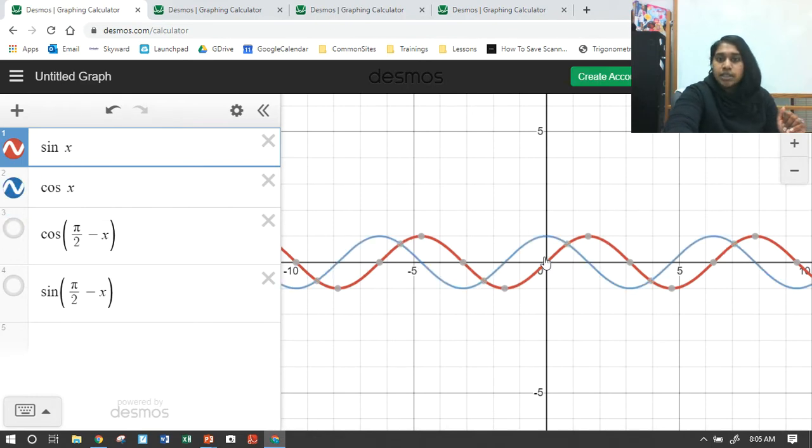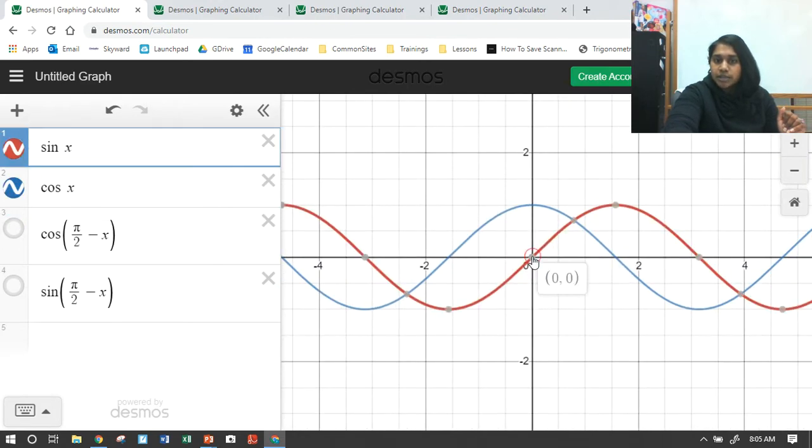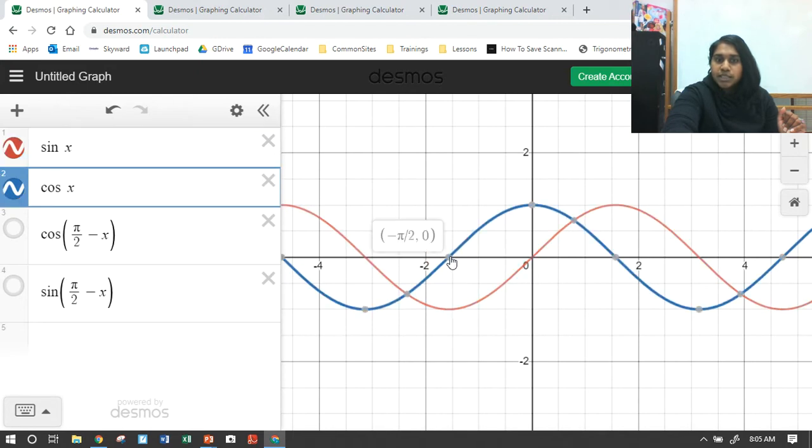Okay? So if I literally took this point and moved it to the left by pi over 2, then you end up with the value you want.